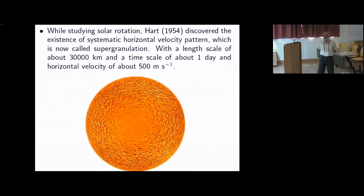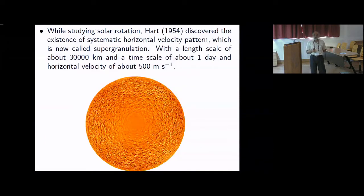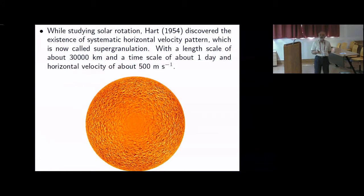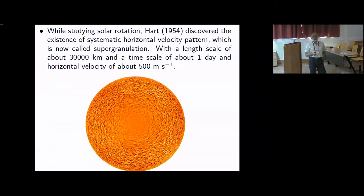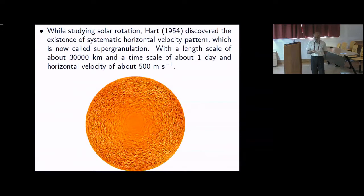Apart from granulation, there are other preferred scales of convection. One is known as supergranules, first discovered by Hart in 1954. Supergranules are a much larger scale, about 30,000 kilometers, with a timescale of about one day and velocity of about 500 meters per second, mostly horizontal. You can average over the shorter scale so granules get averaged out. Because only line-of-sight velocity is measurable, you see most of the signature near the limb where horizontal velocity points toward us. The vertical velocity component is of the order of 100–200 meters per second.